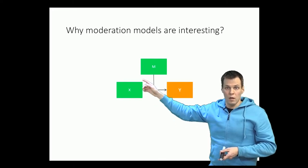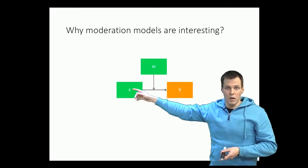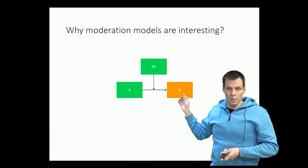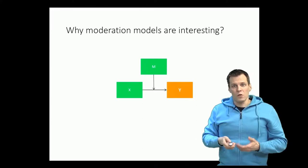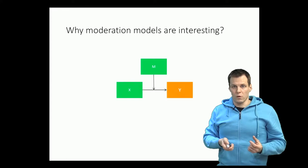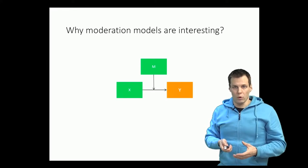So you need both, and the effect of one variable depends on the presence of another variable, the third variable. So these models allow us to study the effects of context and effects of two variables influencing the dependent variable together.